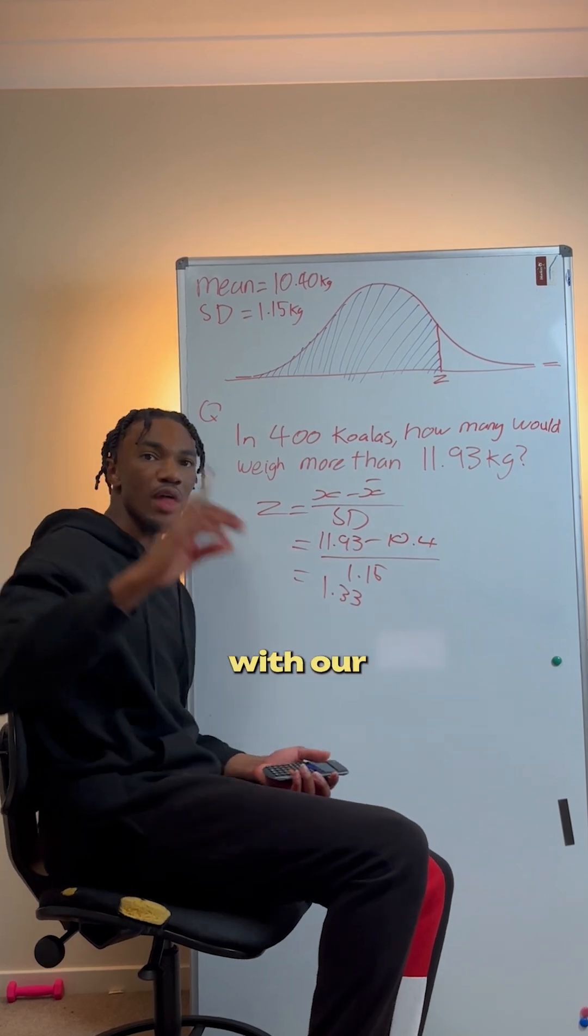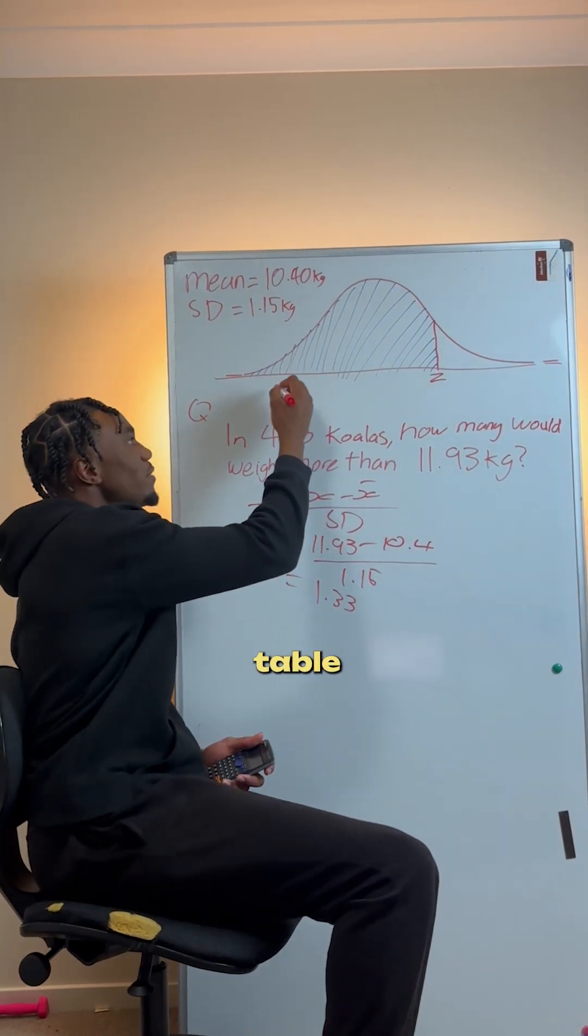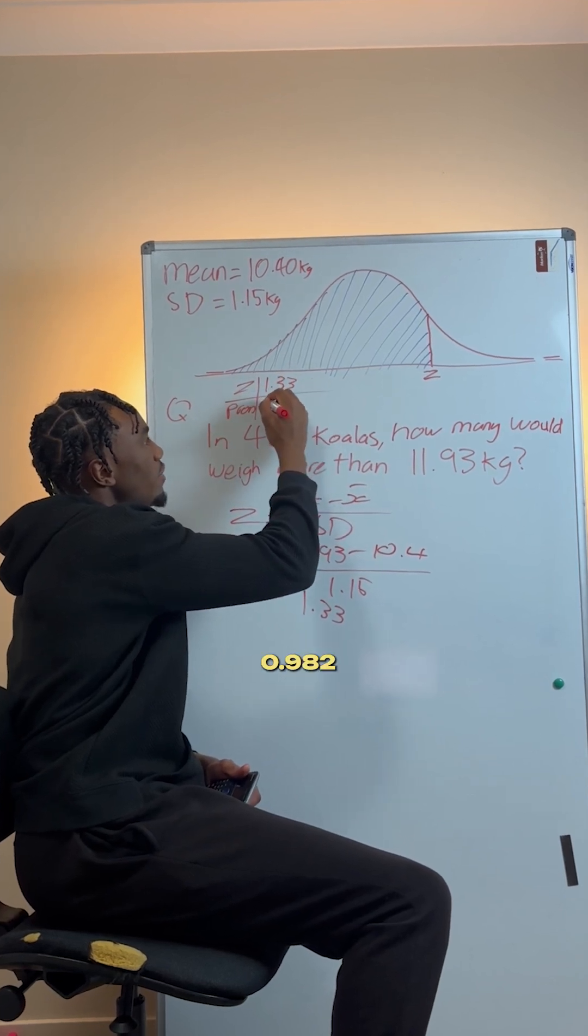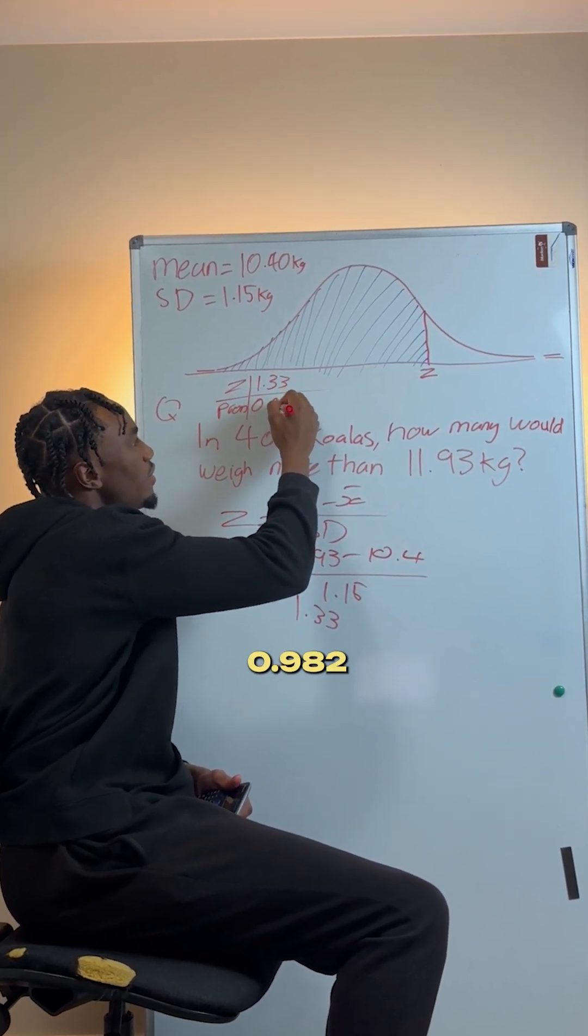Now we can associate this z-score with our probability table. In the probability table, the z of 1.33 is 0.9082.